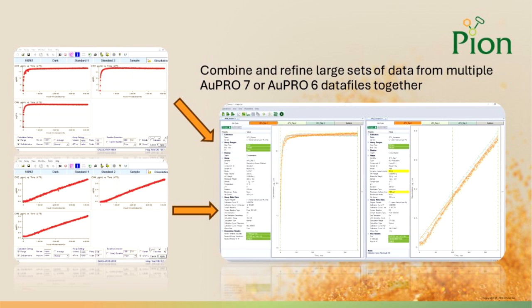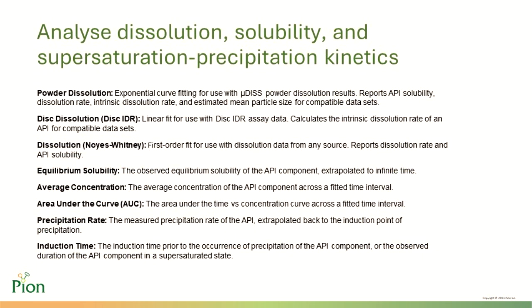The data module will also automatically calculate average values for fitted data and produce average profiles whenever multiple data sets are included. A broad range of data analysis options are currently available in the data module, including options for powder and disk dissolution assays, solubility assays, supersaturation precipitation studies, or whole dosage form dissolution assays. More general functions for running calculations to find the area under the curve data, or simply the concentration over a selected time range, are also included.